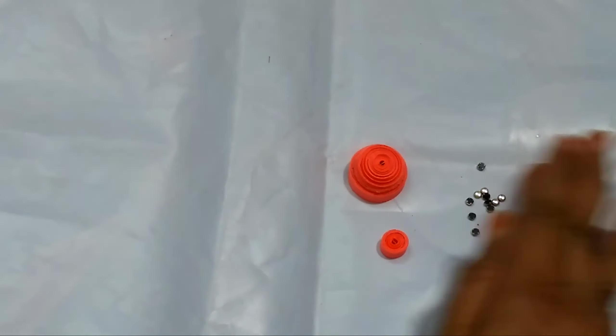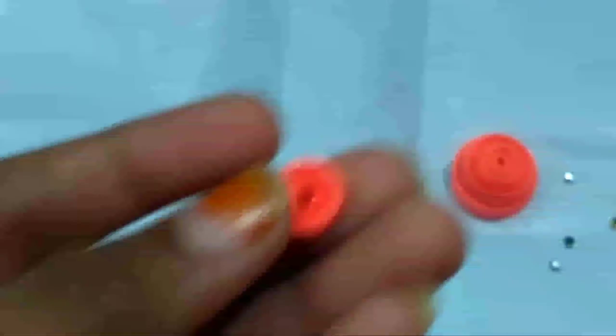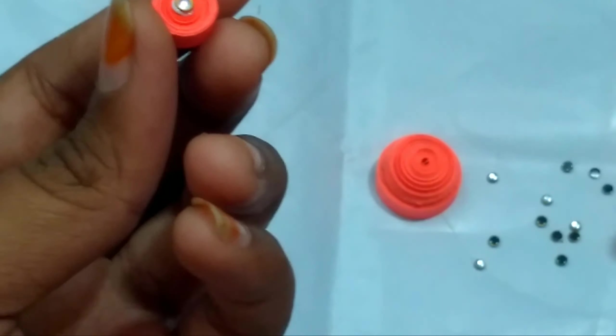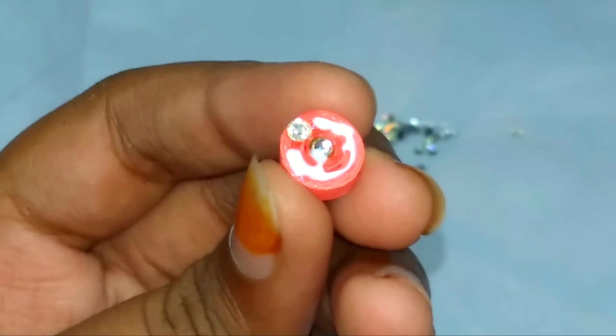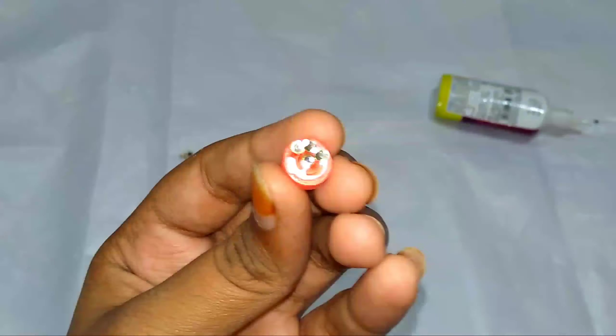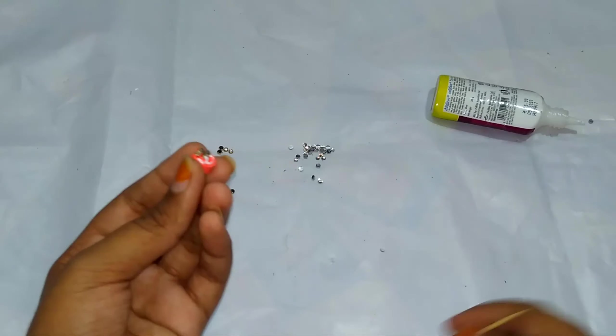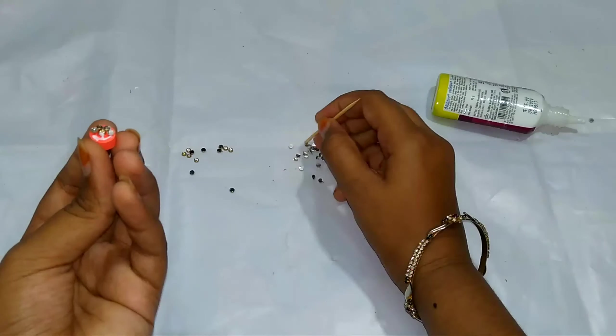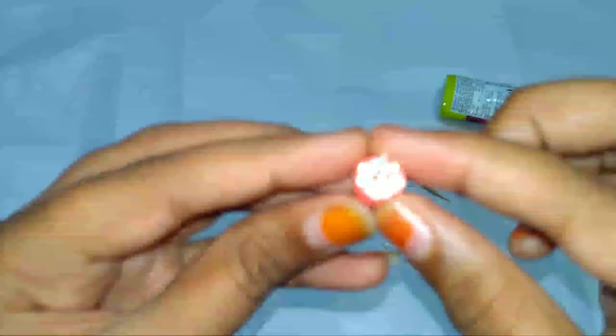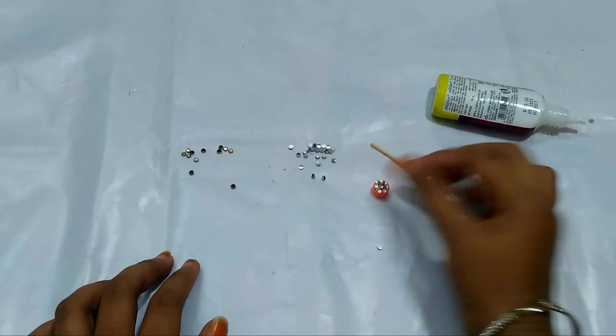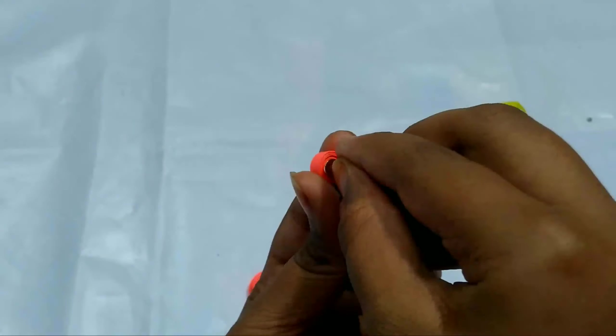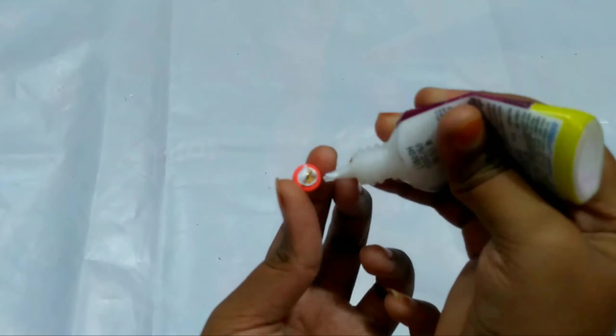Now take the frame kundans and stones and attach them to that. Now take the stud and attach it to the top part of the jhumka. I'm applying shiner to the jhumka base.